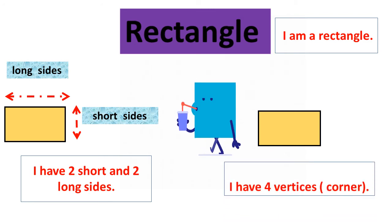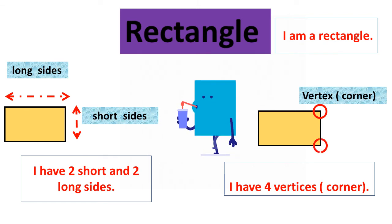I have four vertices or corners. Dear students, a corner is a place where two lines are joined to each other. One corner is called a vertex and corners are called vertices.